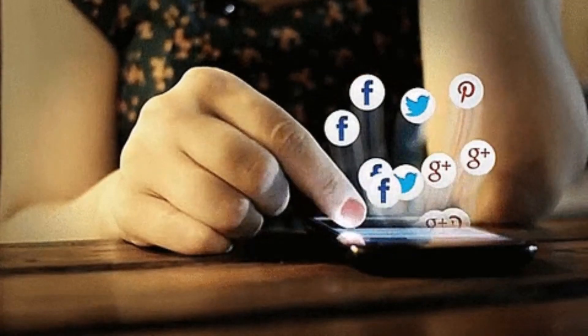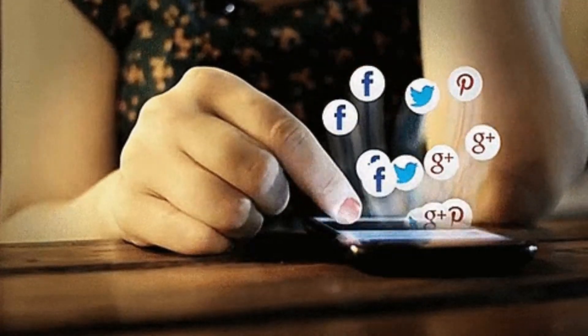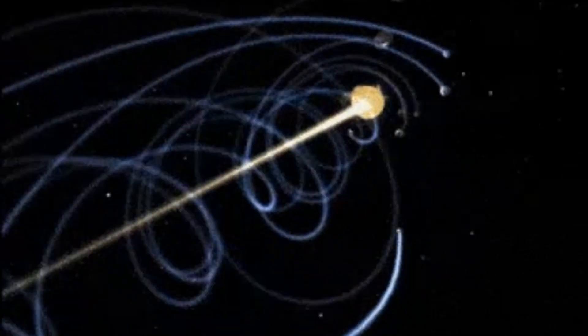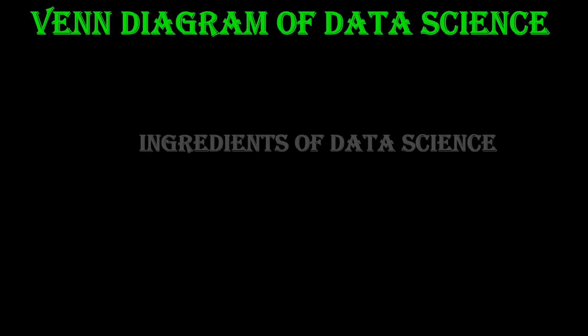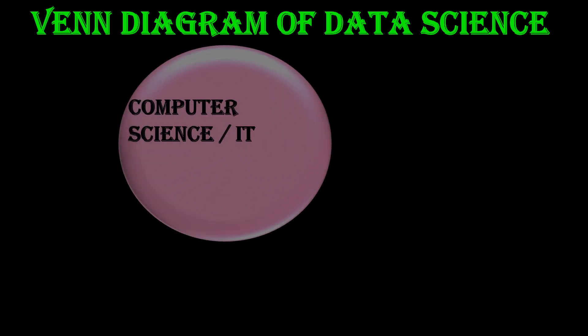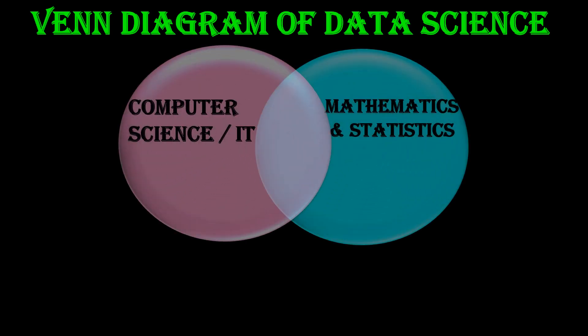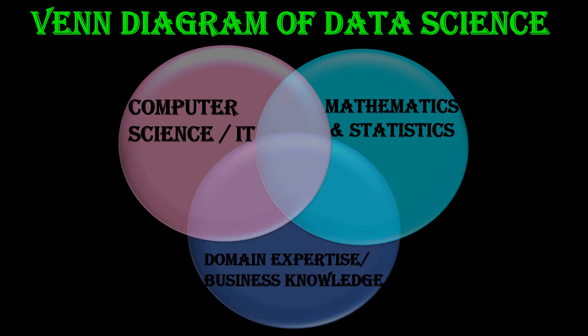Data science is the combination of data and science. Data means large amounts of information collected from various sources. Science means using scientific methods, math, and computer skills to analyze and understand the data. The Venn diagram of data science consists of three key areas: computer science or IT, mathematics and statistics, and domain expertise — that is, familiarity with a particular field such as healthcare, finance, marketing, business, or education — and their intersection in the middle is data science.